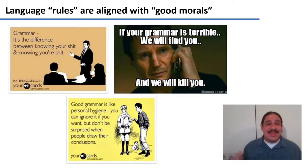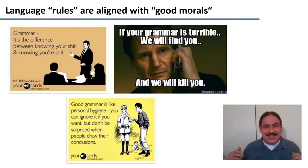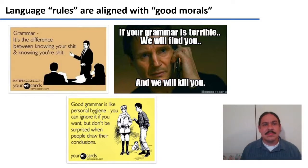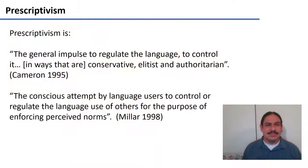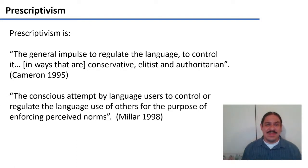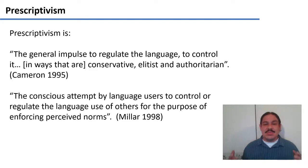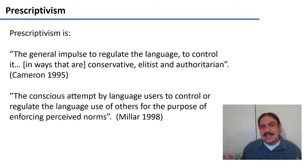It's usually people who would say things like: 'If your grammar is terrible, I'm going to find you and kill you.' Or that good grammar is like personal hygiene, and that if you use wrong grammar, you're somehow dirty or you have bad morals. This general impulse to try to correct people over nitpicky rules is called prescriptivism. It's the impulse to regulate language, usually to control it in ways that are conservative and elitist. It's an attempt to control or regulate language for the purpose of enforcing some norm.